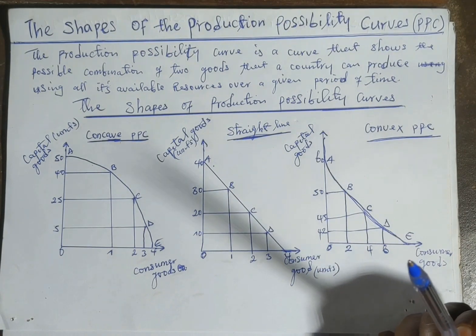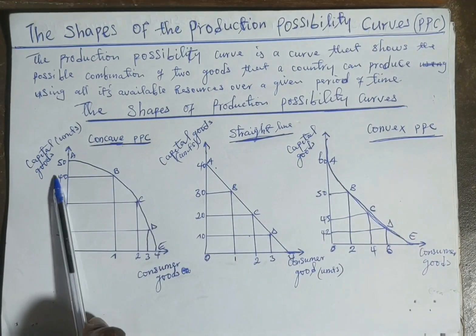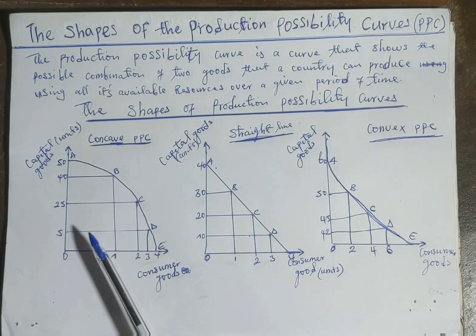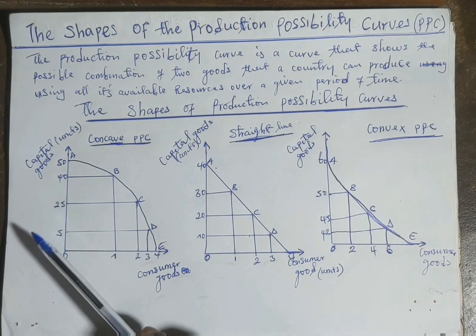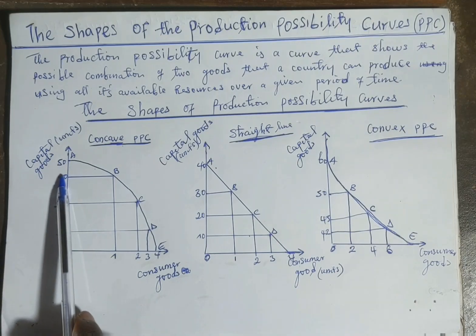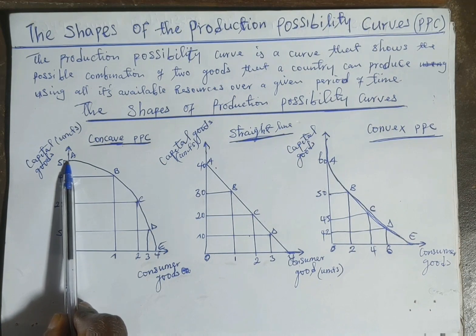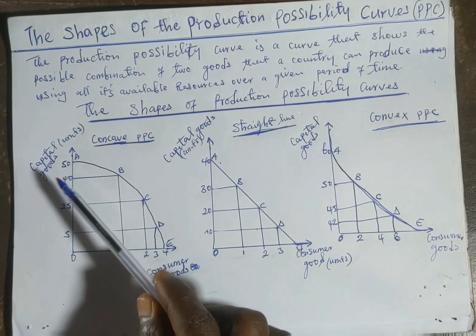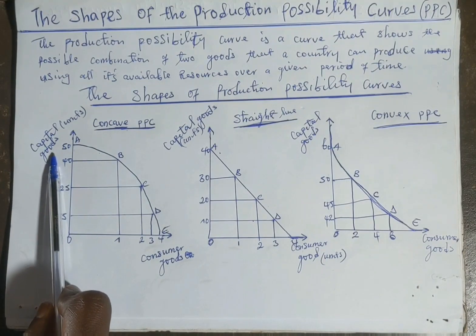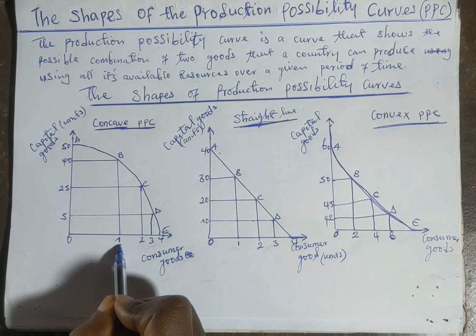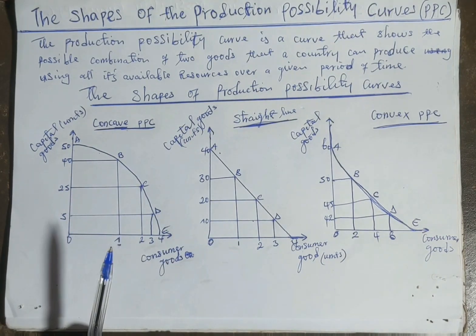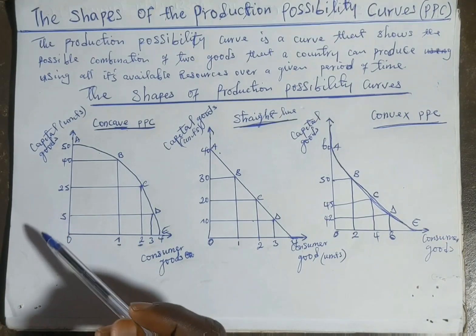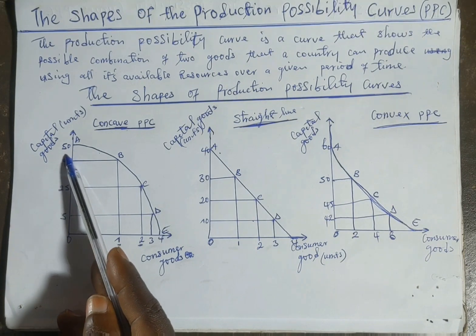The concave PPC shows an increasing opportunity cost between two goods. That is, if more of one good is to be produced, the sacrifices made are greater. For example, a country currently producing 50 units of capital goods wants to produce one unit of consumer goods — it has to give up 10 units of capital goods. At combination C, the opportunity cost has increased from 10 to 15.